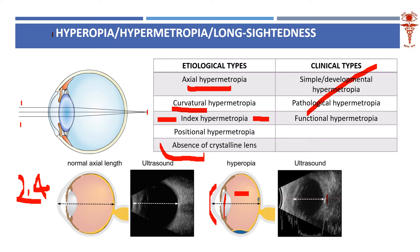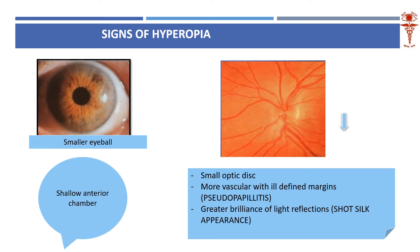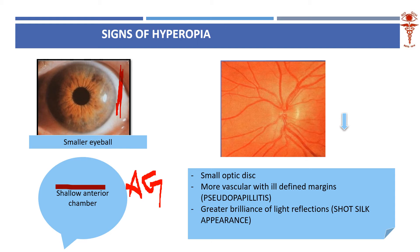A common exam question about the hyperopic eye concerns its special features. The anterior chamber will be very shallow, and the eyeball itself will be very small — small eyeball with shallow anterior chamber. A shallow anterior chamber in a small eyeball is associated with angle closure glaucoma, which is an important clinical association to remember.